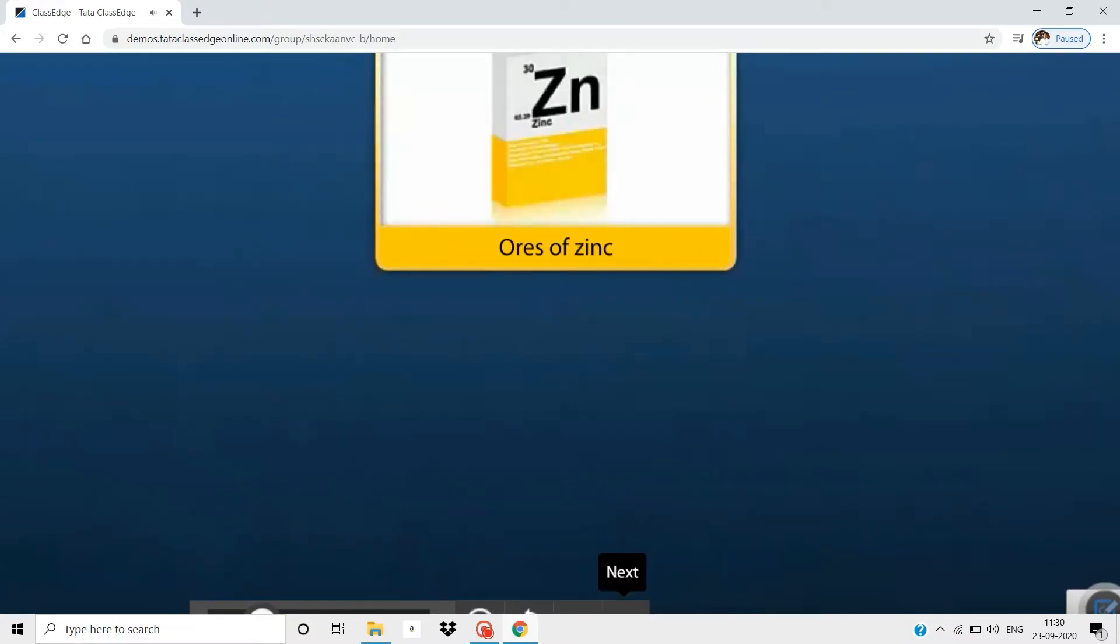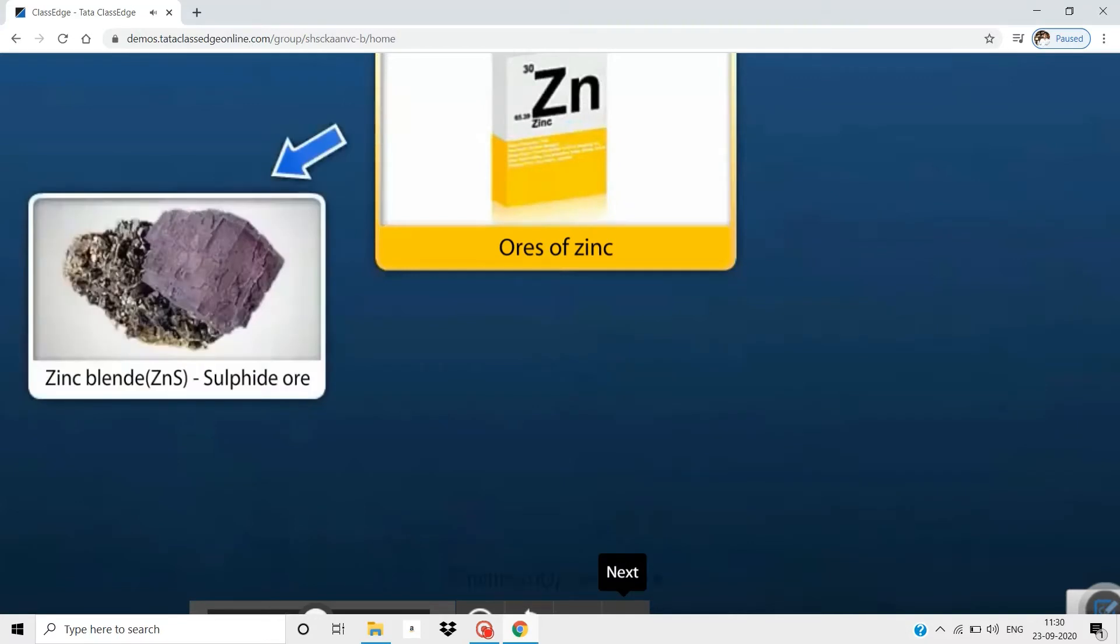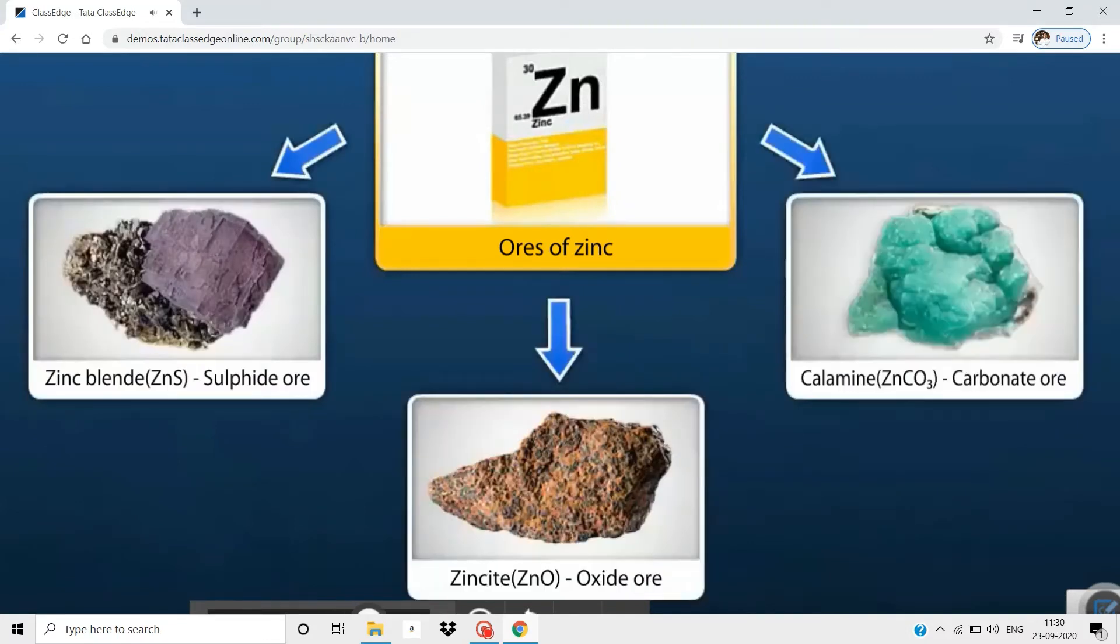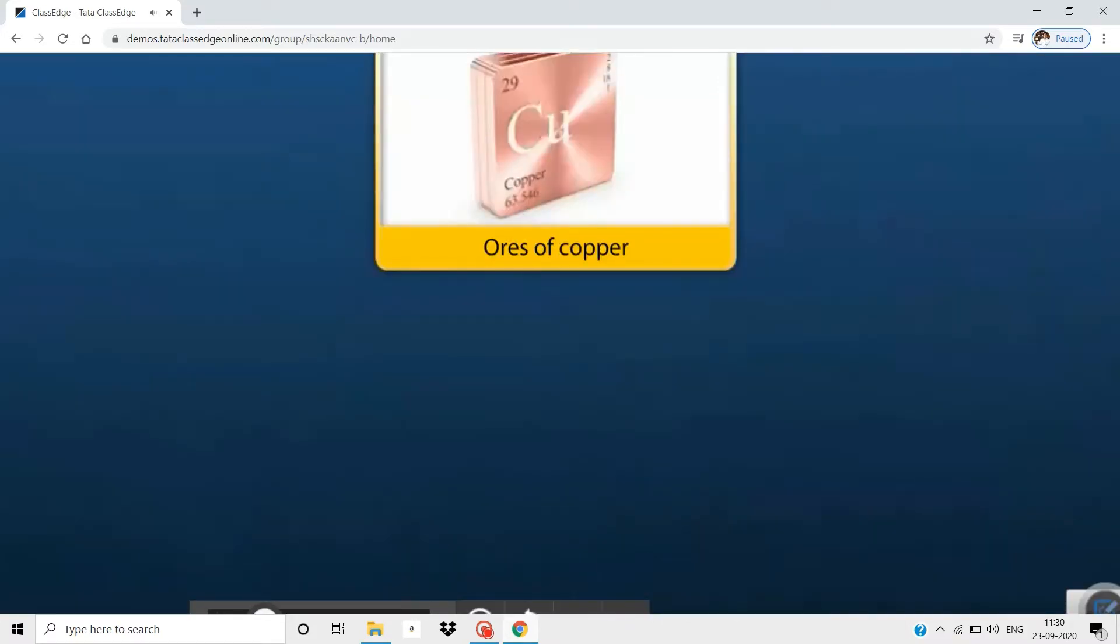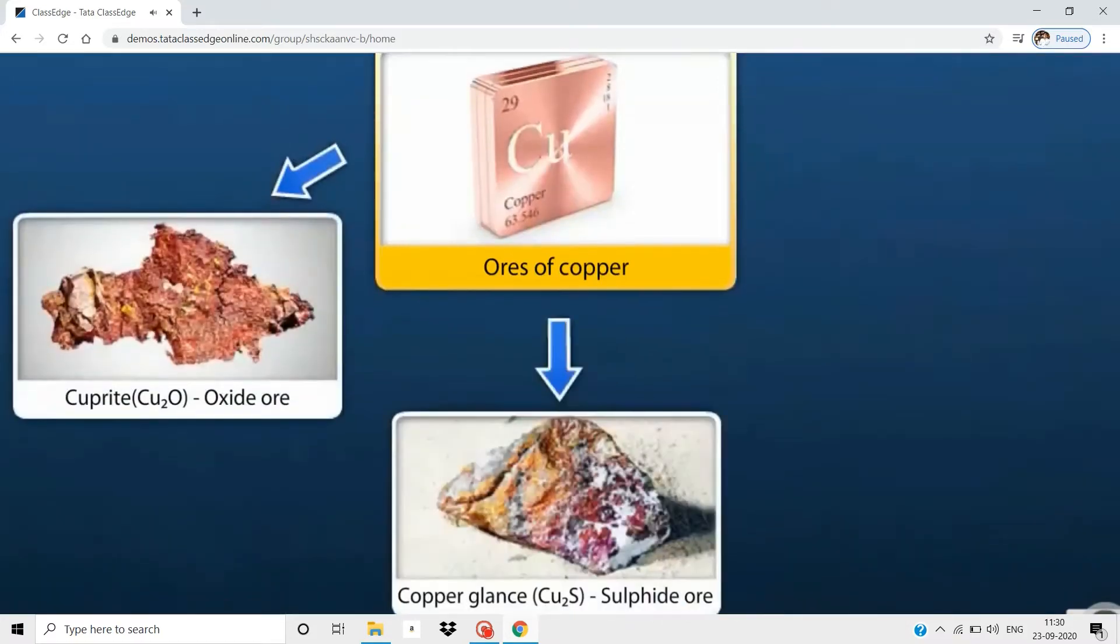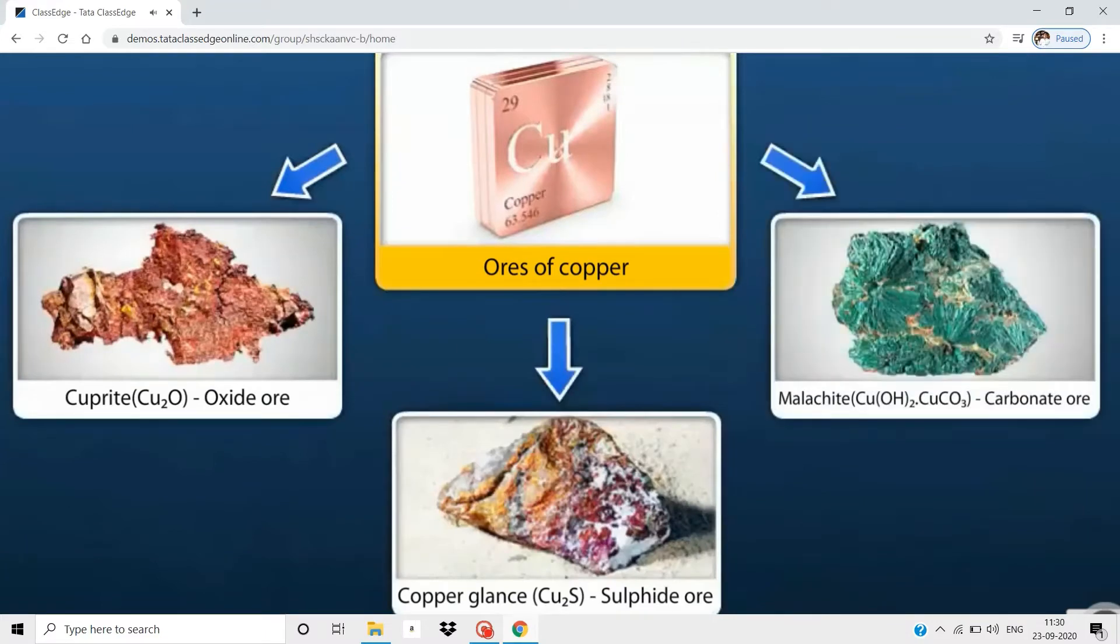Zinc can be extracted from zinc blend, zincite, and calamine. Copper can be extracted from cuprite, copper glans, and malachite.